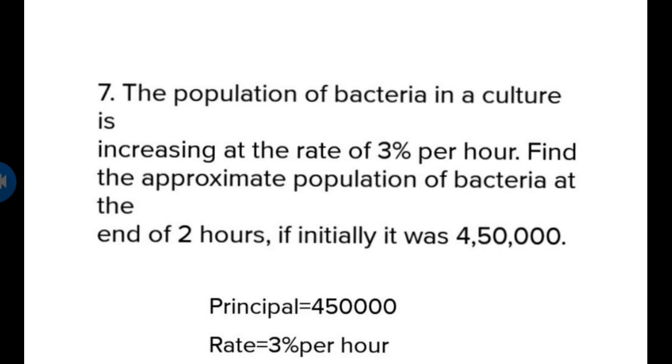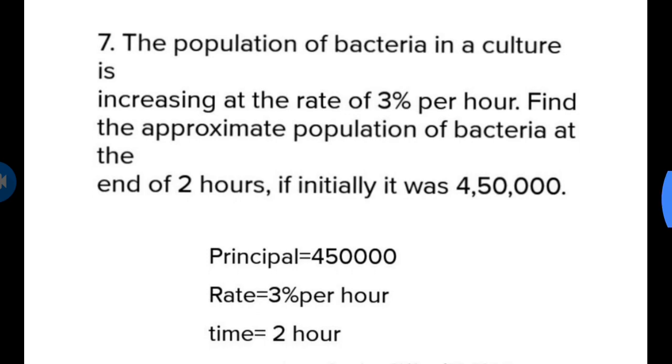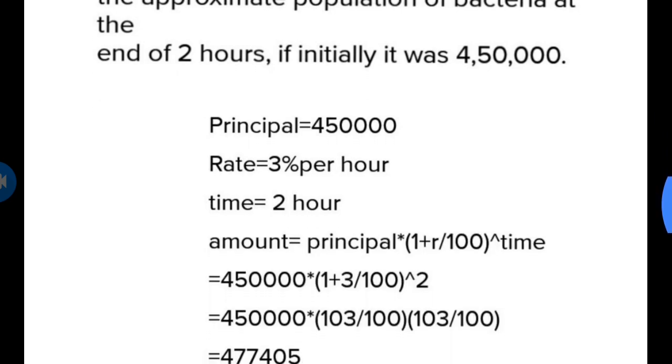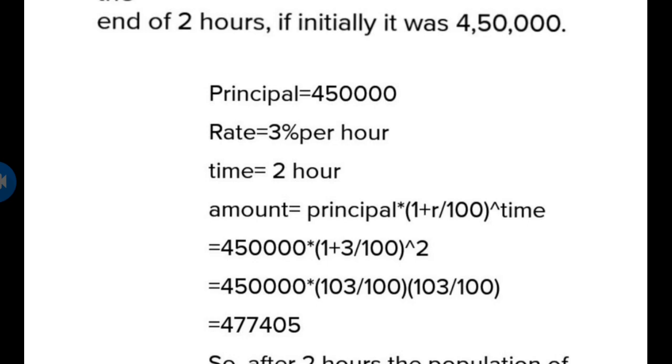Next question: The population of bacteria in a culture is increasing at the rate of 3% per hour. Find the approximate population at the end of 2 hours if it was 450,000. Our principle is 450,000, rate is 3%, and time is 2 hours.